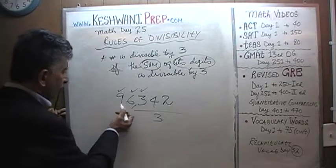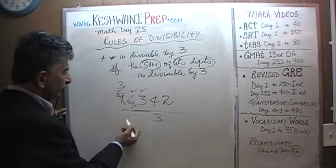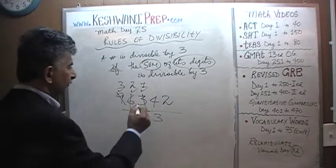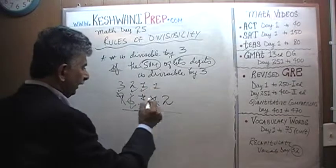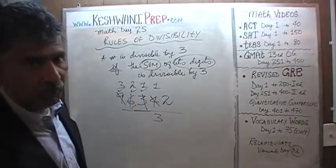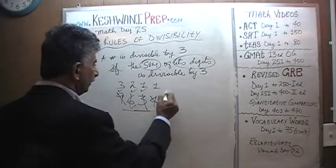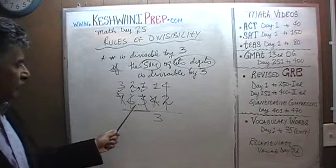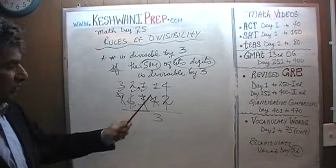Let's verify: 96342 divided by 3. 9 has three 3s. 6 has two 3s. 3 has one 3. 4 has one 3, remainder 1 joins 2 to become 12. 12 has four 3s. The answer is 96342 divided by 3 equals 32,114.